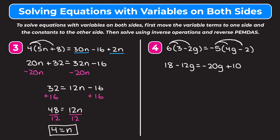So now we have 18 minus 12G equals negative 20G plus 10, and we want to get the variable terms together. I'm going to move the negative 20G from the right side to the left side. Because it is a negative 20G, I'll add 20G to both sides. On the left, negative 12G plus 20G gives 8G, and I have 18. Now I need to get rid of this 18 that's being added, so I subtract 18 from both sides. On the left, 18 minus 18 is 0, so I'm left with 8G.